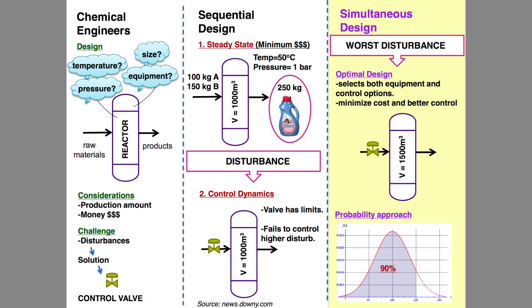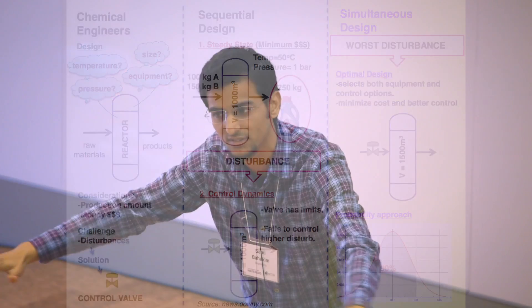Stage one: the steady state design. Here the engineer will ask, what product do I want to produce and how much? For example, 250 kilograms of washing detergent. Using that information, the engineer can do a backward calculation to get all the other required conditions, and the whole plant will be built.